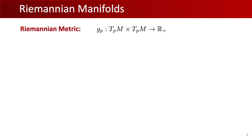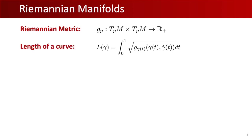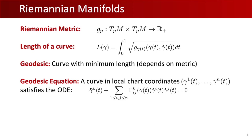A Riemannian manifold is a smooth manifold that comes with a family of smooth inner products in the tangent space called the Riemannian metric. This inner product varies smoothly between points and allows us to compute important quantities such as distances, angles, areas, and volumes. The length of a curve can be computed by integrating the metric tensor along it, and we can define a distance metric as the length of the minimum-length curve connecting two points. These minimum-length curves are called geodesics — the generalization of straight lines in Euclidean space.